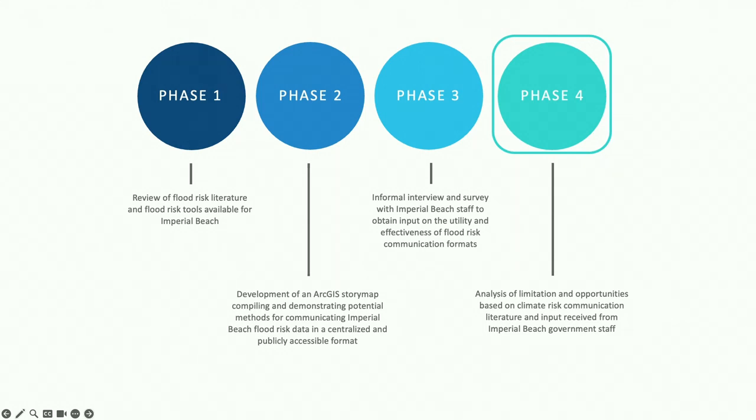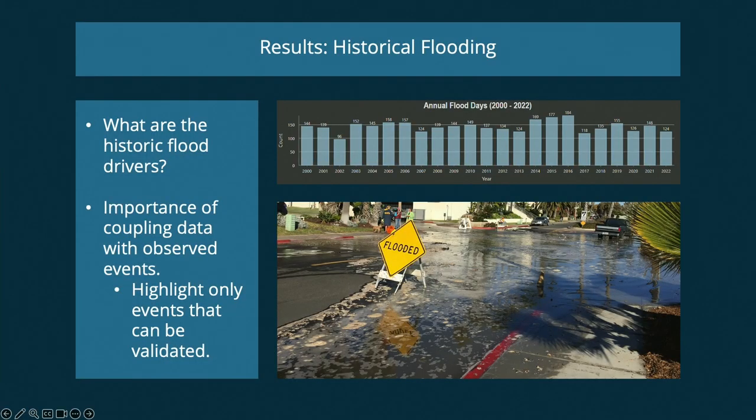Based on stakeholder feedback paired with flood and climate risk communication literature, I identified key limitations and opportunities. For historical communication, most residents have some flooding experience, but not all flooding is the same. Understanding how to communicate what is flooding from groundwater versus El Niño, king tides, or large wave events was a key limitation. Being able to communicate what drivers influenced these events gives better insight into how flooding is changing over time.